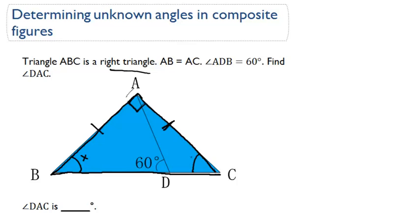Let's call these angles X, because we don't know what they are yet. They're exactly the same because this is an isosceles triangle. We're also given angle ADB is 60 degrees, that's this right here, and we want to find angle DAC.